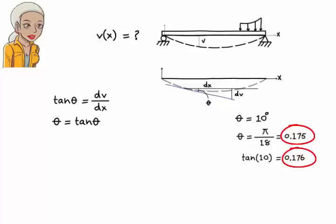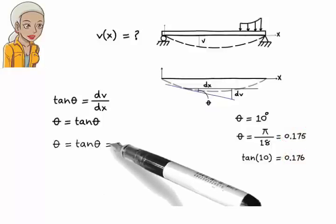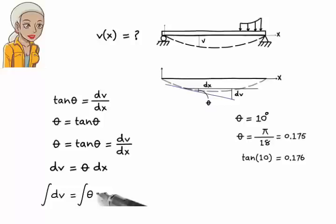So this simplification is okay. We can write theta equals tangent theta equals dV/dx, or dV equals theta times dx. Integrating both sides of this equation, we get V equals integral of theta dx.